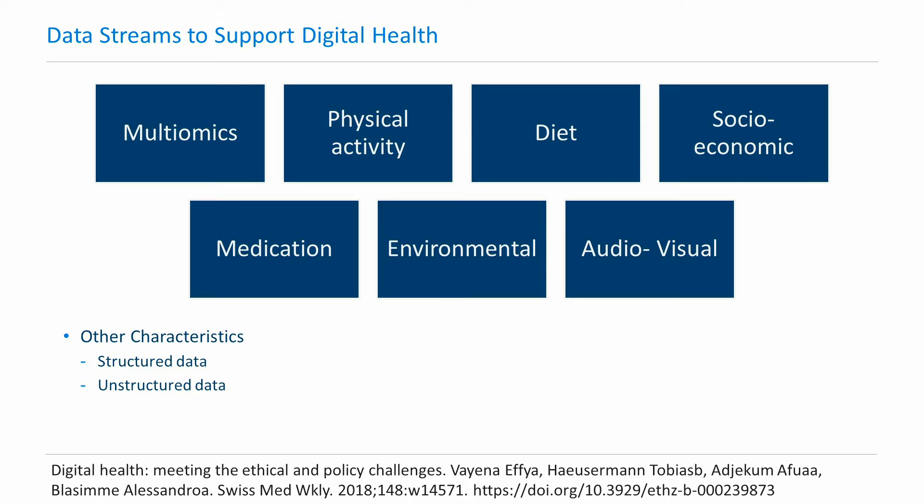Let's turn our attention to the kind of data that can be collected when it comes to digital health. The characteristics associated with the data might change depending upon the technological developments, but to provide a brief overview, it can include multiomics data like proteomics, genomics, metabolomics, etc., physical activity data, dietary information, socioeconomic factors, medication use, environmental, and audiovisual data.